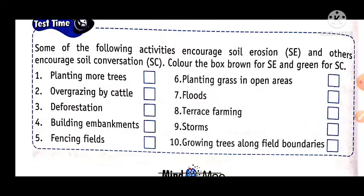Next is overgrazing by cattle. Overgrazing causes soil erosion because when there is overgrazing, the upper layer of soil is destroyed. So overgrazing is soil erosion, and you will fill in the brown color for that box.